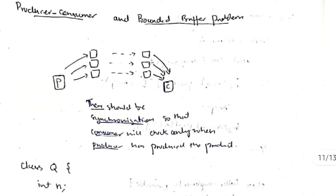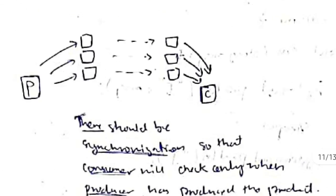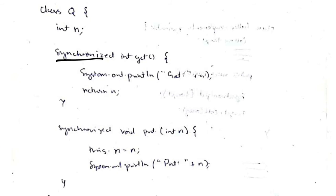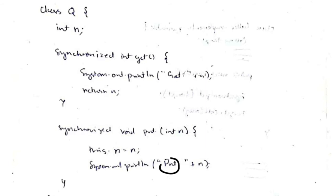There are limitations to synchronization. Consider the producer-consumer problem: if a producer produces a good every 10 seconds and a consumer consumes every 5 seconds, the consumer checks twice and gets the same good twice, resulting in duplicate outputs. Even with 'synchronized' on the get and put functions, this still happens because the two threads run independently.